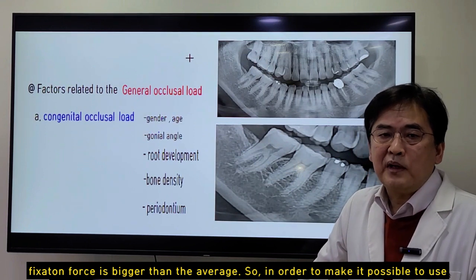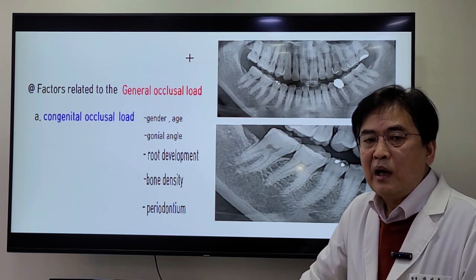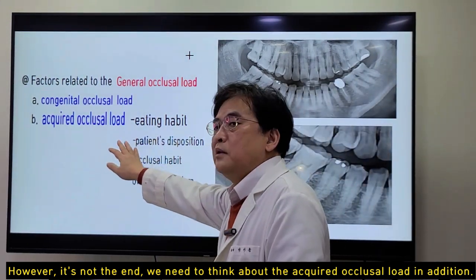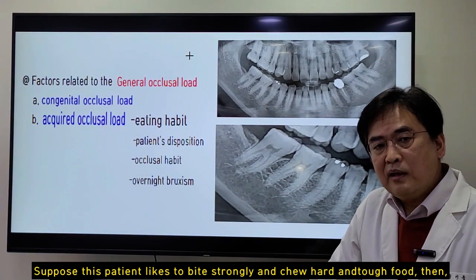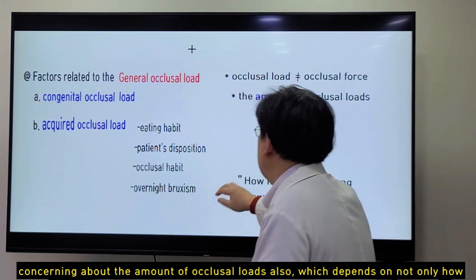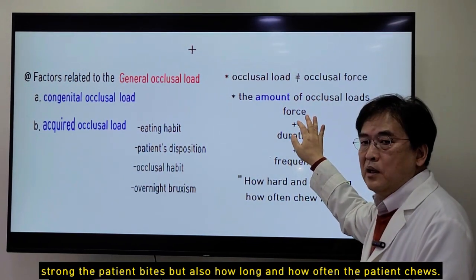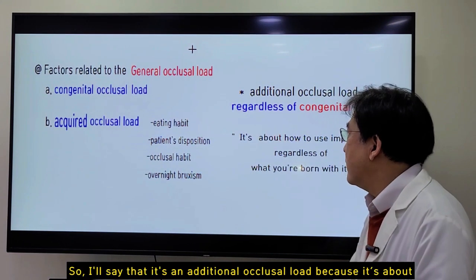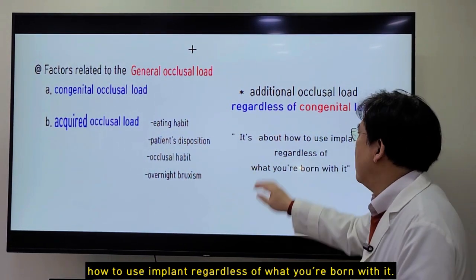So in order to make it possible to use the implant for a long time, we need to get fixation force enough to withstand the occlusal load. We need to think about acquired occlusal load in addition. Suppose this patient likes to bite strongly and chew hard and tough food — then we have to get more fixation force, because the acquired occlusal load concerns the amount of occlusal load, which depends on not only how strong the patient bites, but also how long and how often the patient chews. So it's called the acquired occlusal load because it's about how you use the implant regardless of what you were born with.